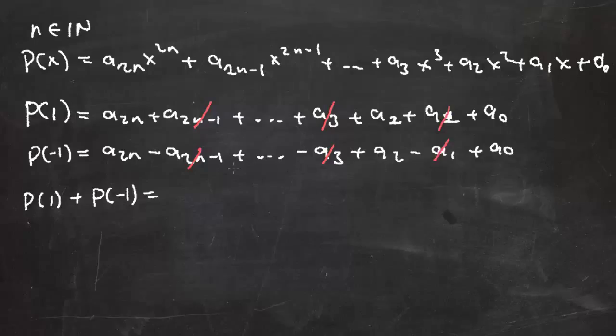Dolayısıyla burada elde ettiğimiz şey 2 çarpı (a₂ₙ + a₂ₙ₋₂ + a₂ + a₀). Yani burada elde ettiğimiz şey çift dereceli terimlerin katsayılarının iki katı.